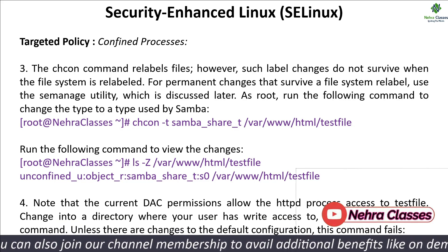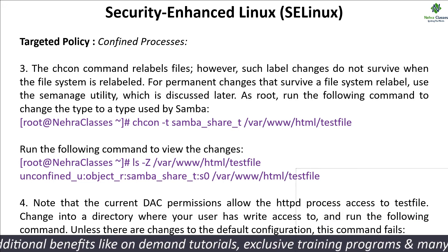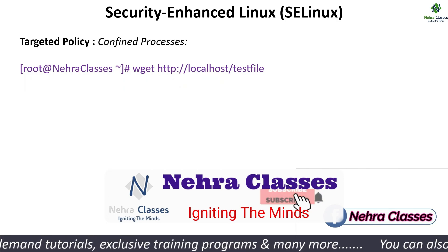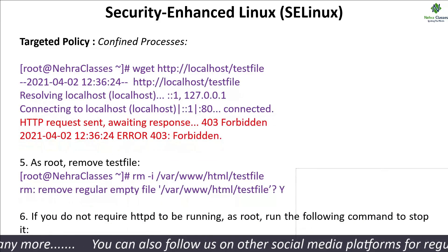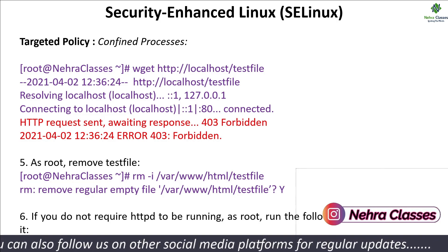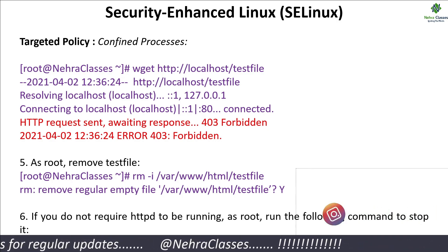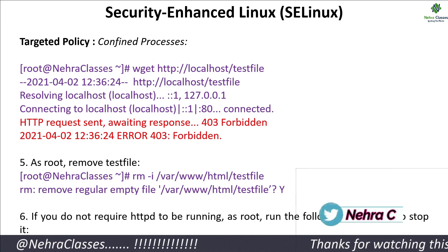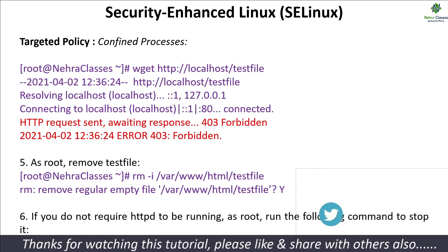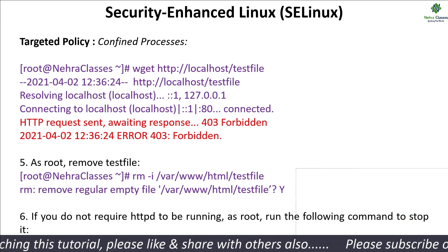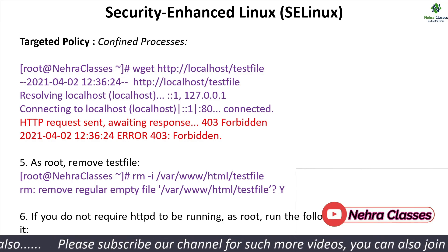Note that the current discretionary access control permissions allow the httpd process access to the test file. However, when we change to the directory and run the wget command again to try to download the file, this time it throws an error showing 403 Forbidden. This is because SELinux is preventing access — the file now has the label samba_share_t, and we are only permitted to download files labeled httpd_t. This is the example of the confined process.